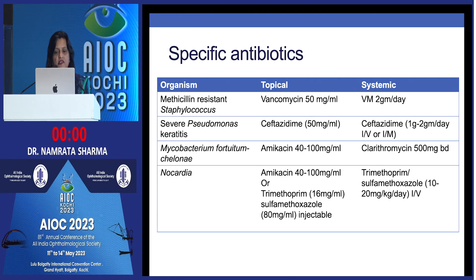Specific antibiotics must be given for specific organisms: vancomycin for MRSA, ceftazidime for severe Pseudomonas keratitis, and for mycobacteria — fortimicin, kiloni, and amikacin. For Nocardia, amikacin and trimethoprim can be given. These are consistent with the American Academy of Ophthalmology recommendations from 2018.